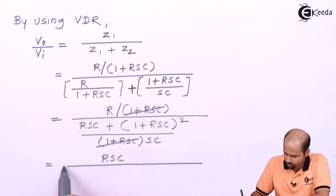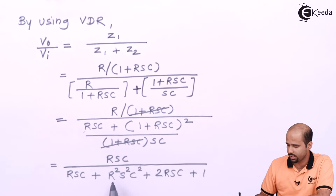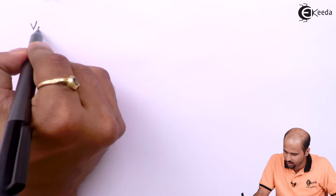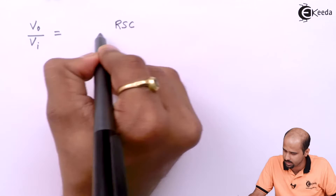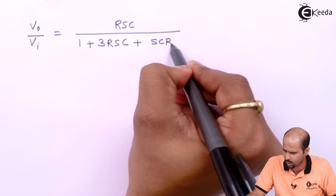This is the final equation. You can write it as SCR whole squared plus 3RSC plus 1 in the denominator part. So whatever I have obtained is nothing but the gain form: VO/VI equal to RSC divided by 1 plus 3RSC plus (SCR)², which we will write as equation number 1.